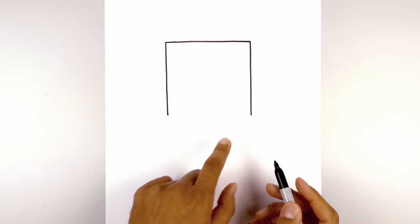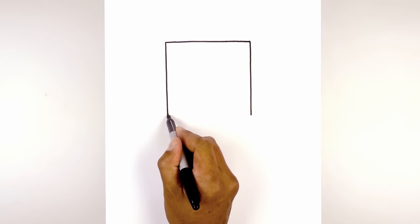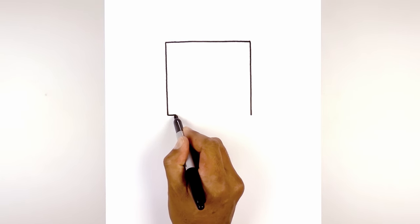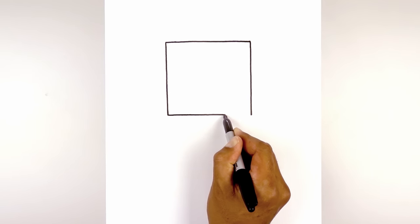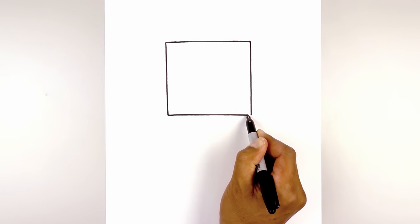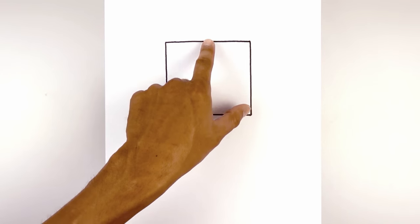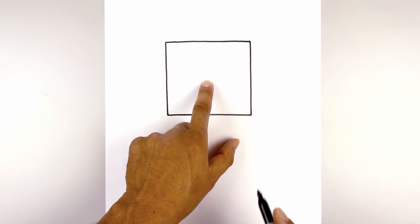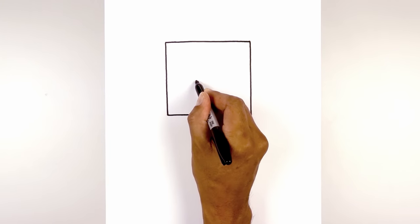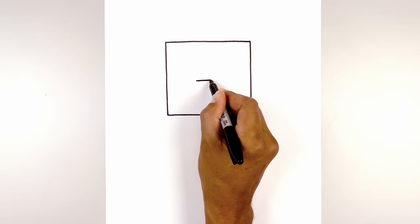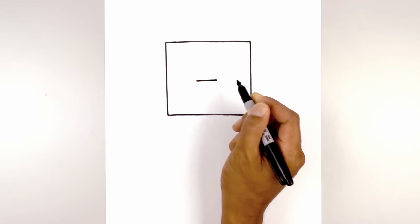Now I'm going to close off the bottom with another straight line. Starting on the left, we're just going to go straight across. Now we're going to find the center of our square and draw a straight line going across from left to right for the top of the mouth.